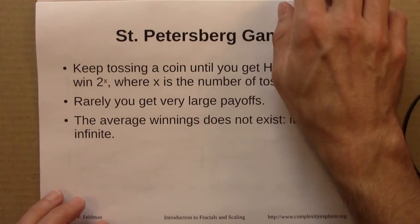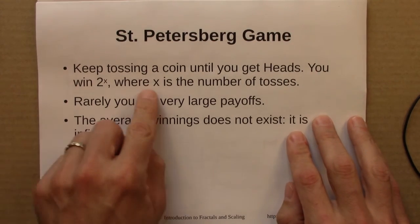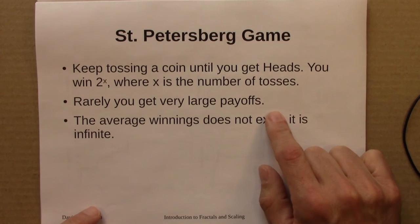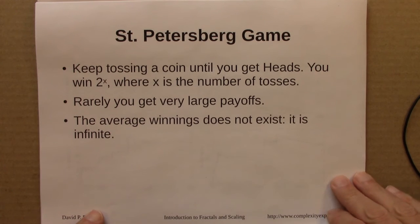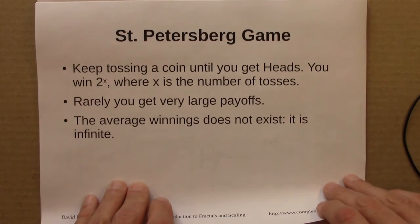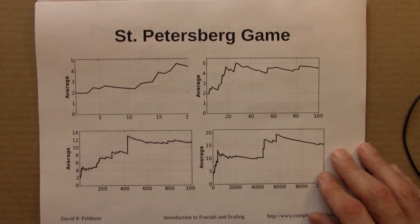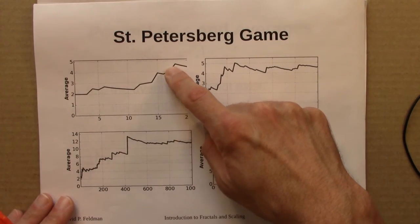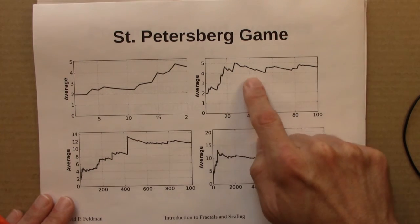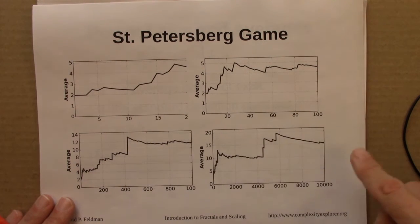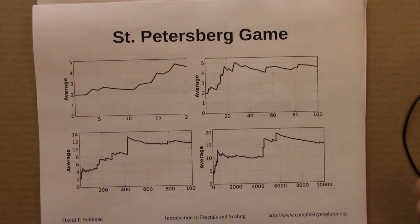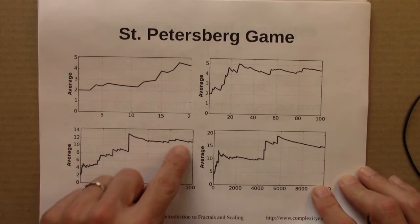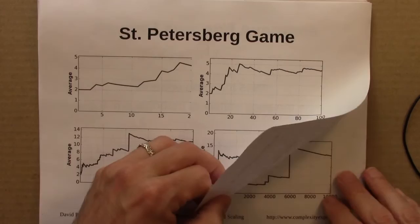In contrast, the St. Petersburg game is rather different. So here you keep tossing a coin until you get heads, and you win 2 to the x, where x is the number of tosses it took. So rarely you get very large payoffs, and most of the time you get small payoffs, like 2 or 4 or 8. And it turns out, we saw, that the average winnings in this case does not exist. It's infinite. And here are some plots showing that. Here I'm plotting the average as a function of the number of trials, and number of data points. And the average is jumping around. That's from 1 to 20. Here's from 1 to 100. It grows, still jumping around. Maybe it's settling down. But nope, it keeps jumping. Here's out to 10,000. As you plot more and more data points, it's not approaching any value. It keeps jumping up, slipping down, jumping up, and slipping down. And we showed mathematically that the average does not exist. It turns out in a sense to be infinite. It grows without bound.